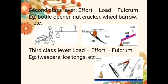Examples of second class levers are a bottle opener, nut cracker, wheelbarrow, etc. For the nut cracker, the nut is present between the fulcrum and the force — so the load is present between the fulcrum and the effort. These are said to be second class levers. For the third class lever, the effort is present between the load and the fulcrum. Examples are tweezers, ice tongs, etc.